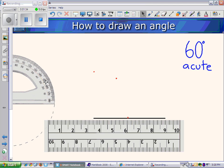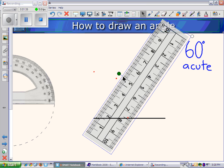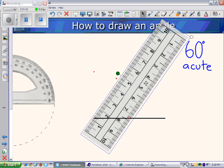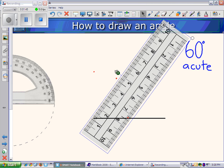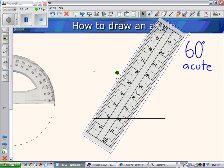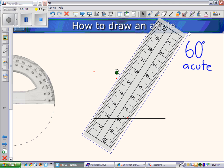And then we're going to take our ruler, and we're going to draw a straight line from the end of the line segment we were using to measure the vertex, through the point that we have just drawn.